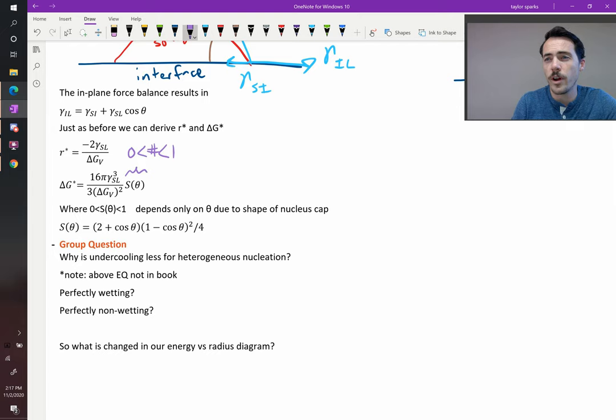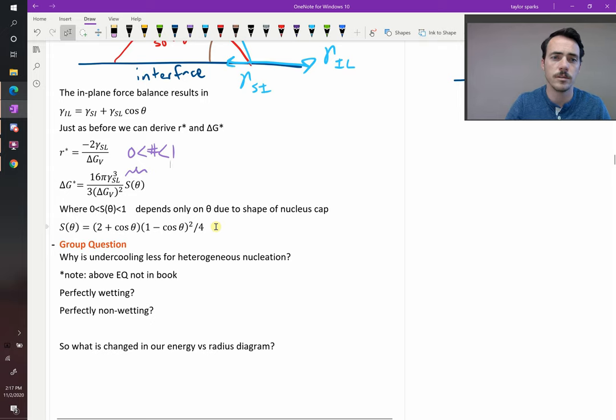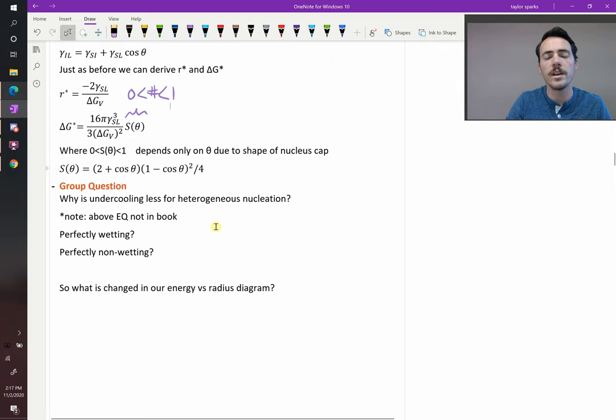It's some number between 0 and 1. So whatever your activation energy was before, it just got reduced by some fraction. And the exact amount you'd have to calculate from the geometry of your sample if you knew the contact angle. So why does this lead to less undercooling for heterogeneous nucleation? Well, think what it does to our energy versus radius diagram.